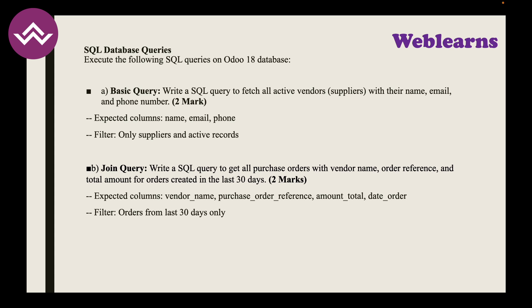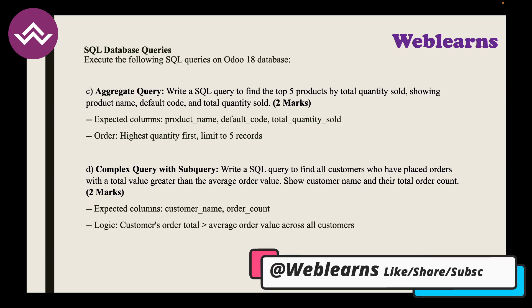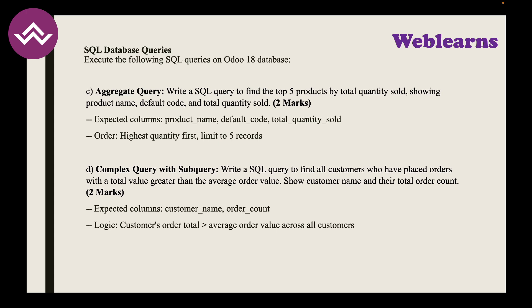SQL Task 3 — Aggregate Query: Write a SQL query to find the top five products by total quantity sold, showing product_name, default_code, and total_quantity_sold, ordered by highest quantity first, limited to five records. SQL Task 4 — Complex Query with Subquery: Write a SQL query to find all customers whose last order total value is greater than the average order value across all customers, returning customer_name and order_count.